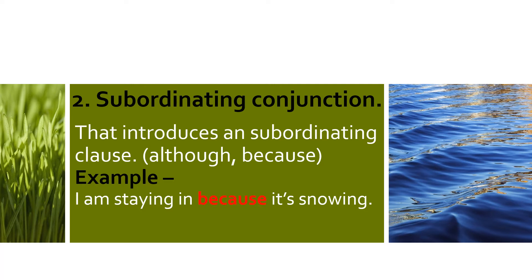The second type of conjunction is subordinating conjunction. A subordinating conjunction introduces a subordinate clause. Examples include 'although' and 'because.' For example in a sentence: 'I am staying in because it's snowing.'